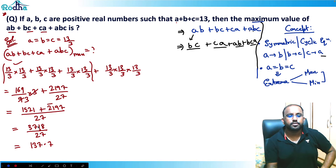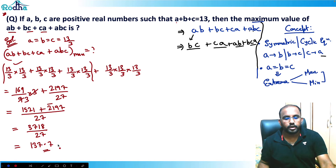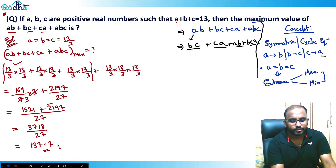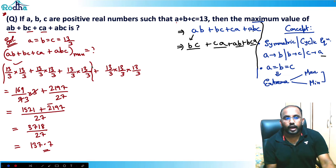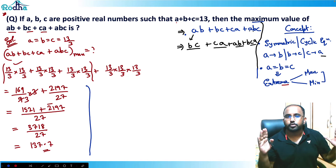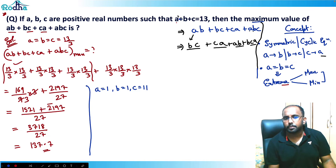So the value is around 137.7. Now, is this a maximum or a minimum? I told you we get extrema — maxima or minima. To check, I'll just change the values. Instead of all equal to 13/3, let me take values farther apart — let's say a equals 1, b equals 1, c equals 11. These still sum to 13.